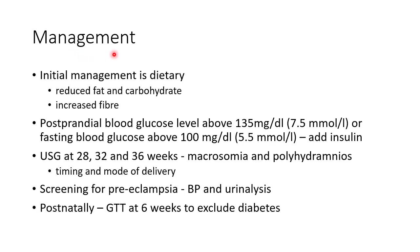Now let us see about the management of GDM. The initial management is dietary — we reduce fat and carbohydrate and increase fiber in the diet. If the postprandial blood glucose is above 135 mg/dL or the fasting blood glucose is above 100 mg/dL, we must add insulin along with dietary modifications. We also do ultrasound at 28, 32, and 36 weeks to look for macrosomia and polyhydramnios, which helps decide the timing and mode of delivery.